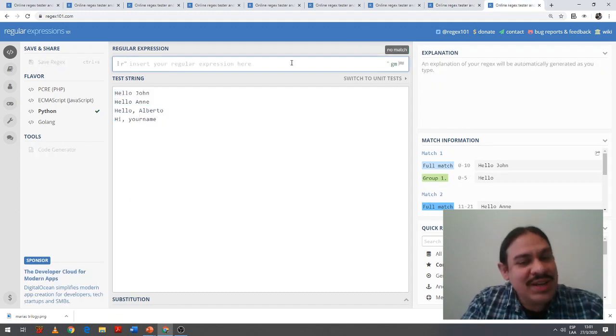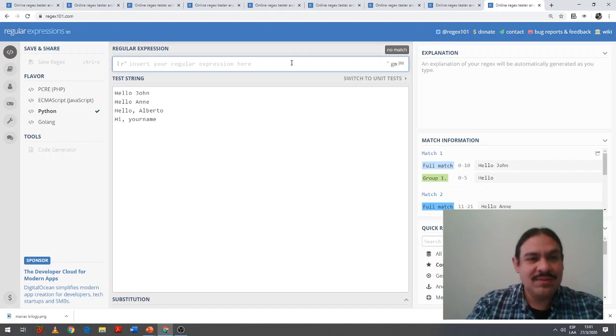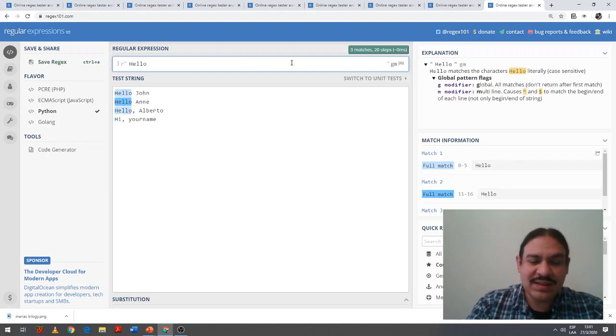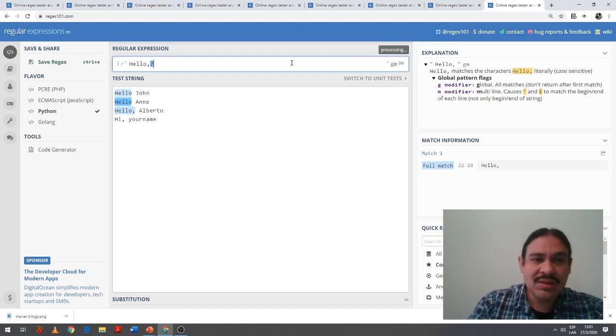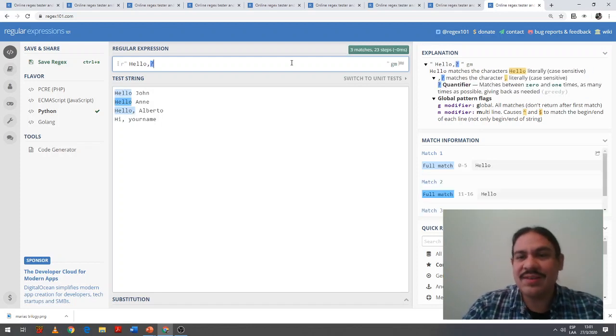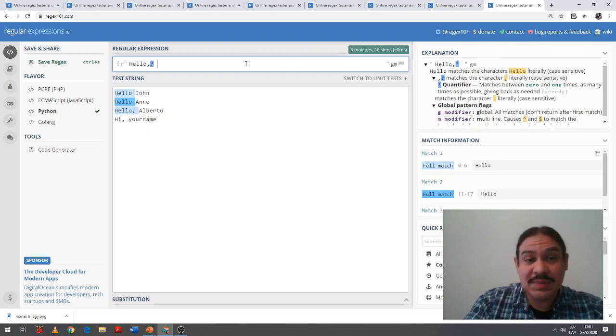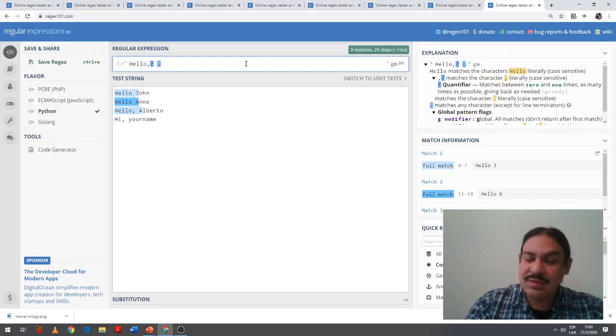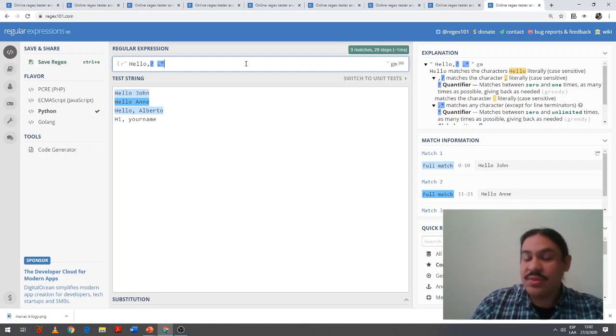So this was a little bit more challenging. We could first try to find literally the hello. We're going to face the problem that the comma could happen zero times or one time. So we're going to have a comma question mark, so that we can have the comma zero times or one time. Then we need the space, because there's always a space between the hello and the words, and then any letter as many times as it's needed. This finds three of our sentences, not four.